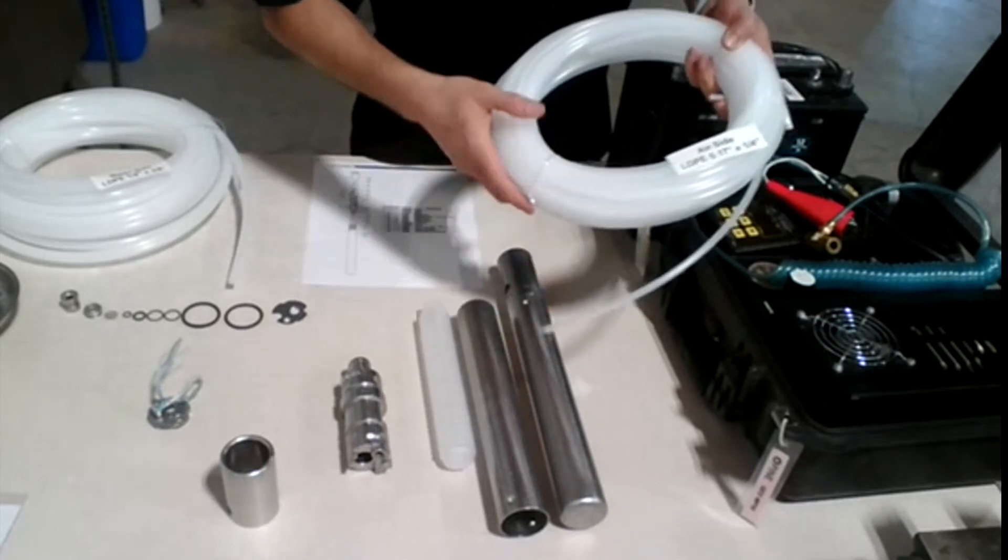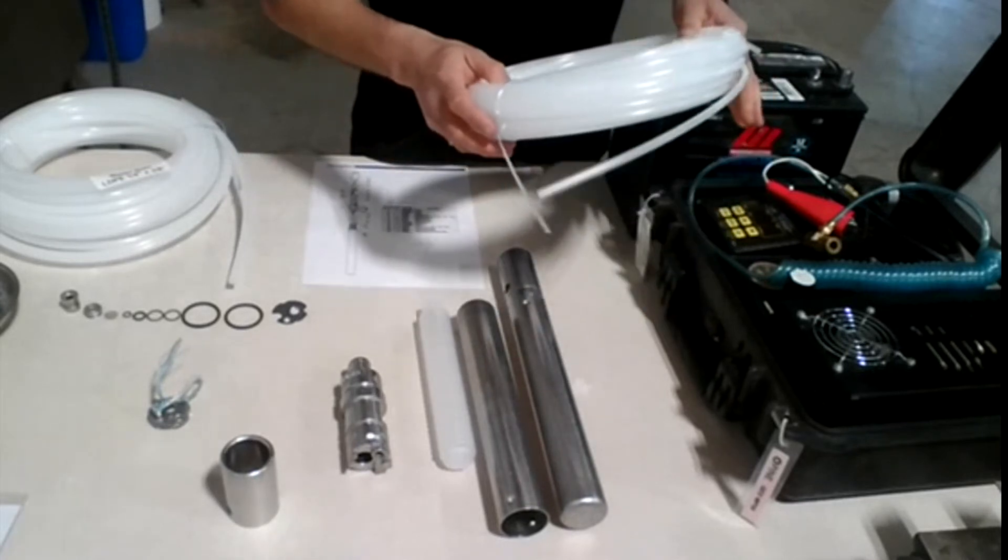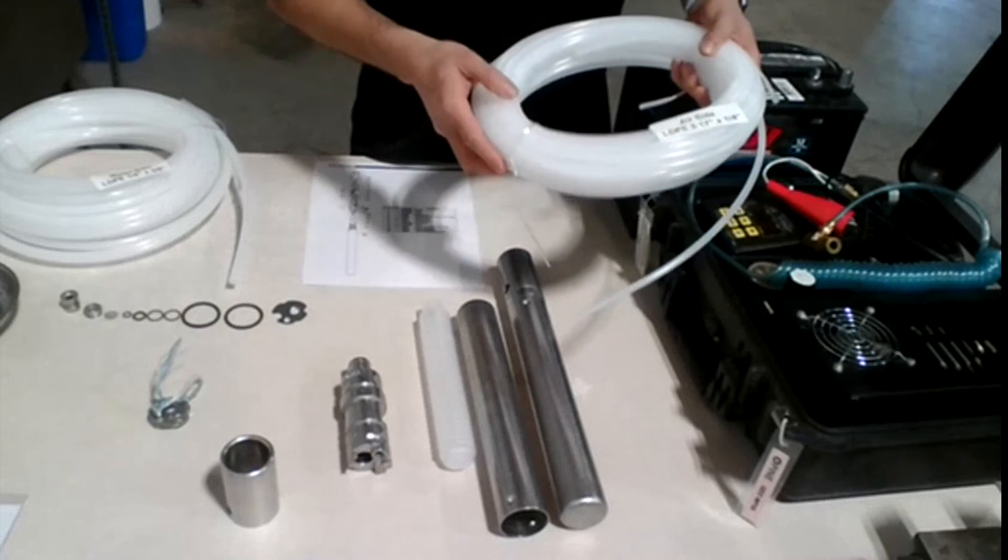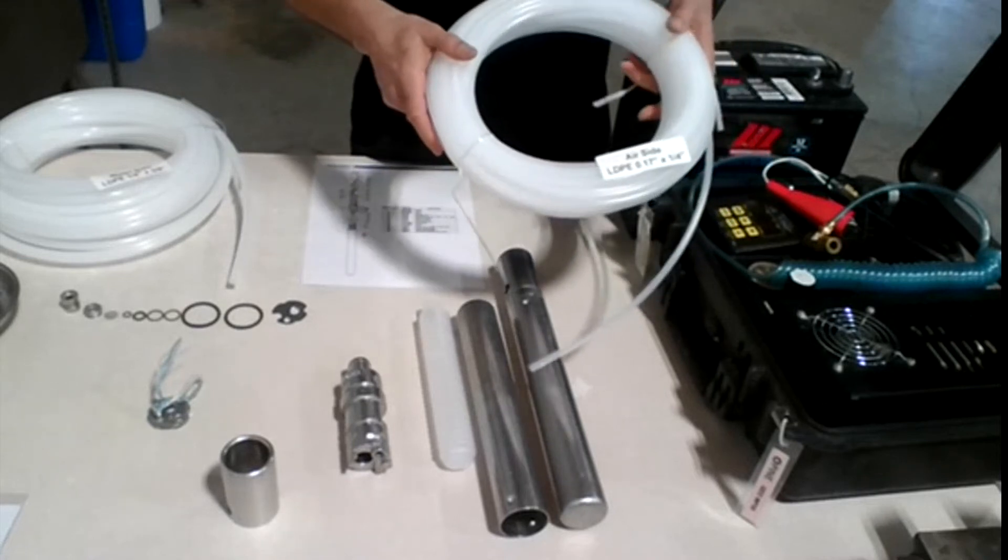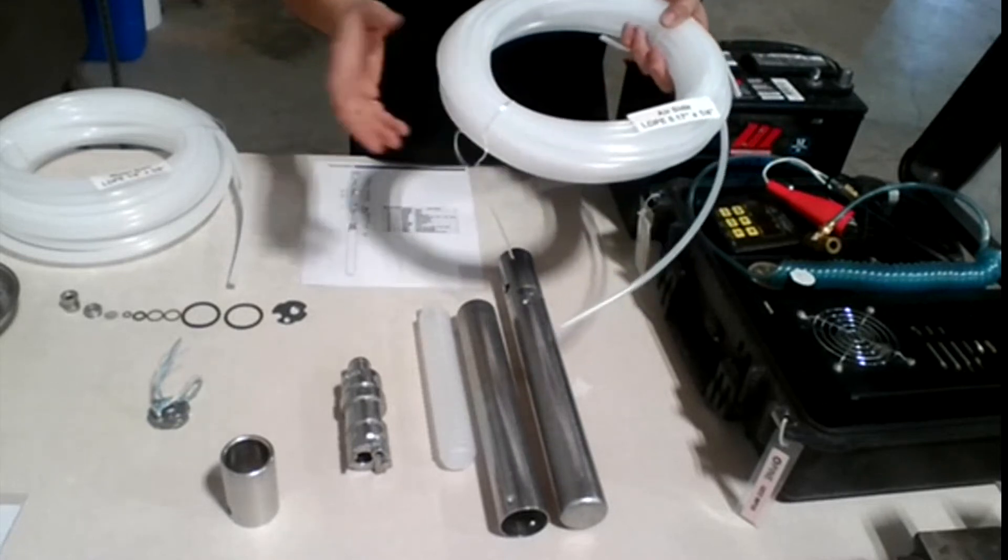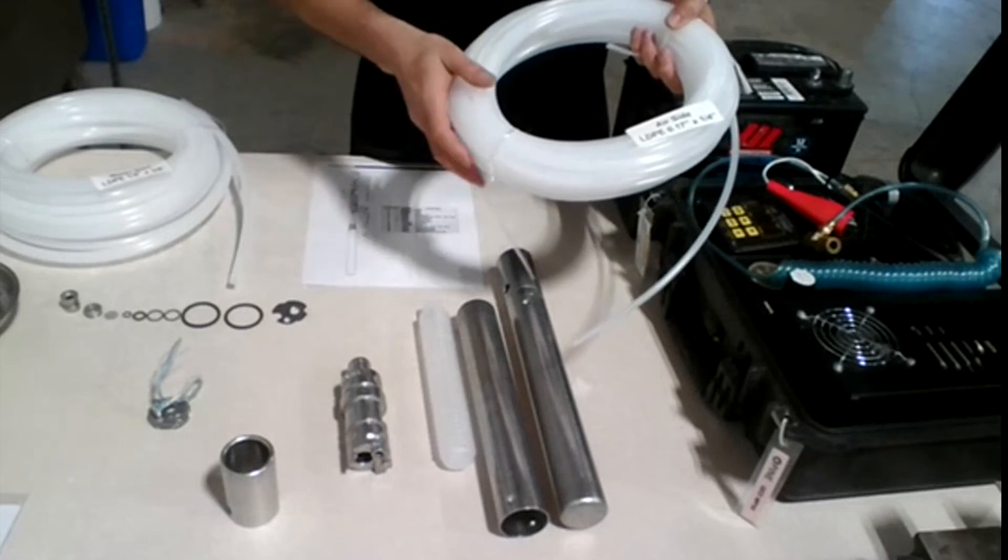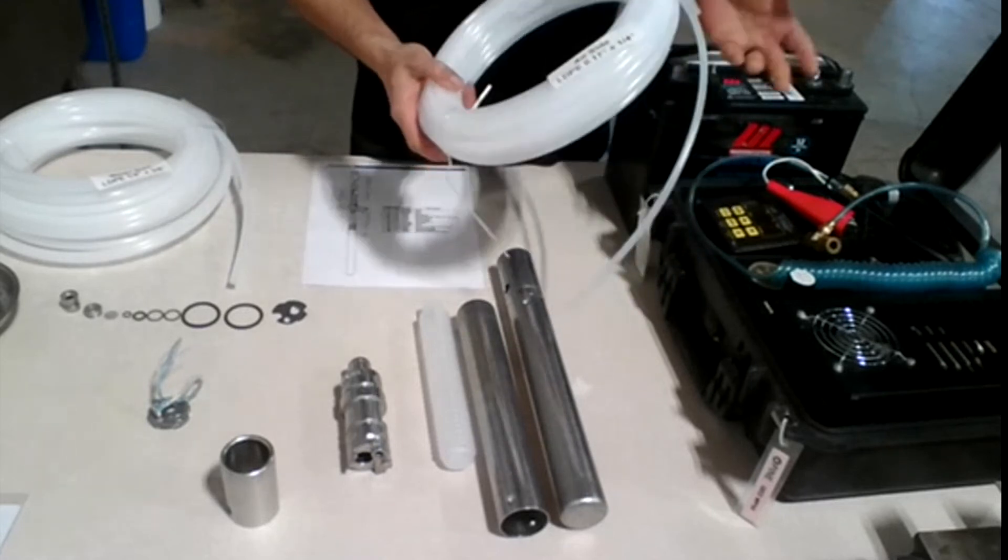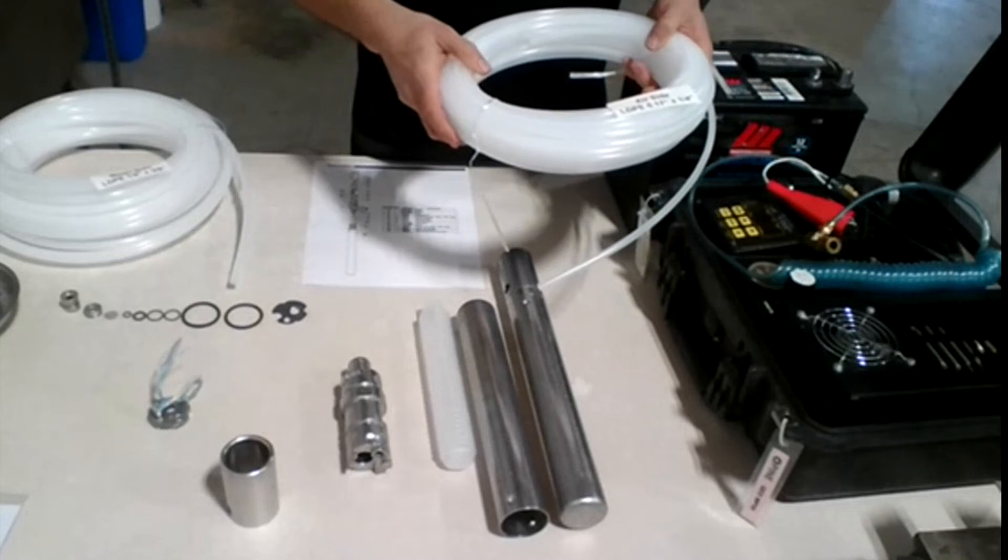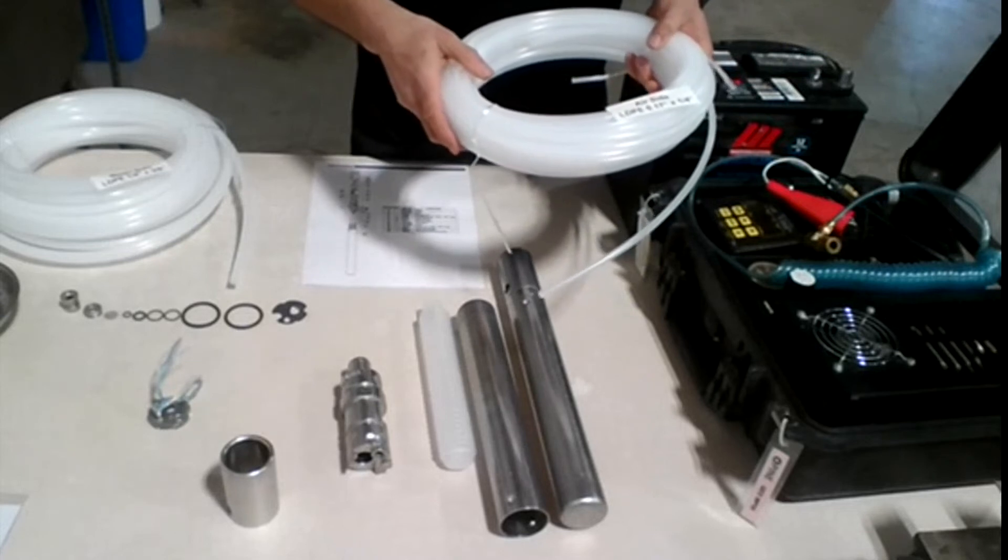So this is low density tubing, but you can also use high density. We also carry high density tubing as well. If you're, depending on how deep your well is, you can use high density just to avoid any kinking, to avoid any bending in your tubing, which works best.